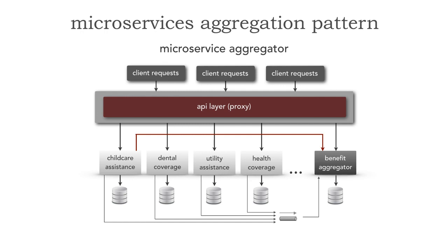There's another way you can actually synchronize, and that's something called a checksum pattern. With this pattern, I can stream out the information from child care, dental, utility, health — all 140 — saying: I am sending information, and here's my service ID and request ID. The aggregator correspondingly streams out information, maybe to Kafka, saying I've received these. And then we can do a reconciliation at any given time to make sure that the messages that were sent were received.